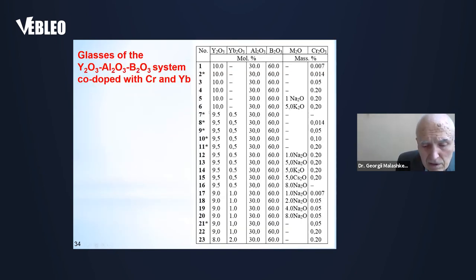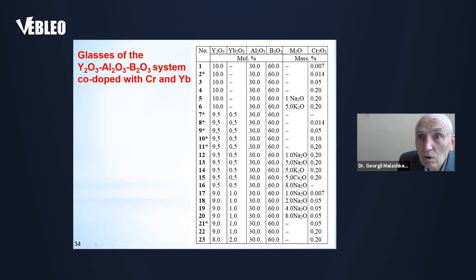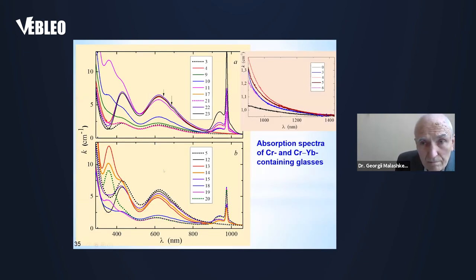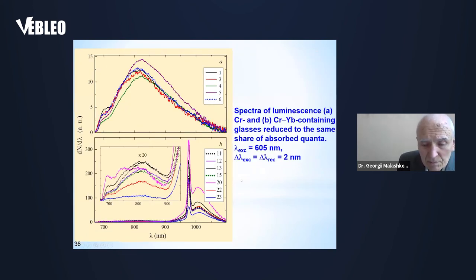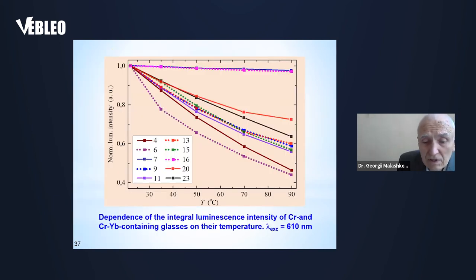In addition, we synthesized a number of similar glasses codoped with cerium and terbium — excuse me, chromium and ytterbium — in this composition. Here you can see absorption and luminescence spectra of the glasses. As is known, luminescence of chromium 3+ in glasses is subjected to effective temperature quenching. Codoping of the chromium-containing glasses with ytterbium, judging from this slide, permits us to decrease the quenching — compare curves 6 and 20, or 4 and 23.